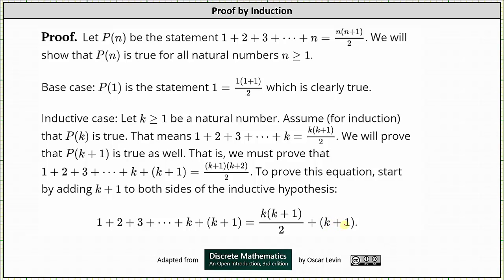And now for the rest of the proof, we need to show that the right side of this equation can be written in the form (k+1)(k+2)/2.